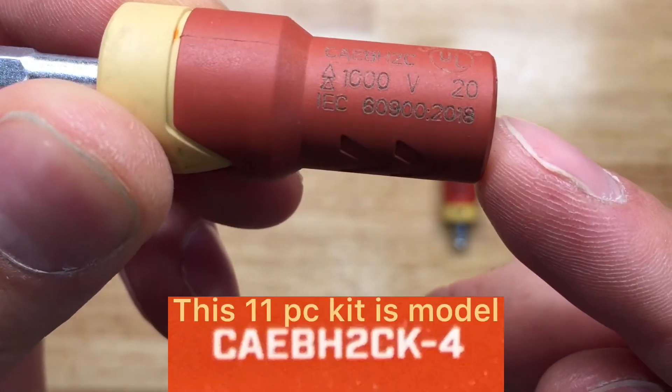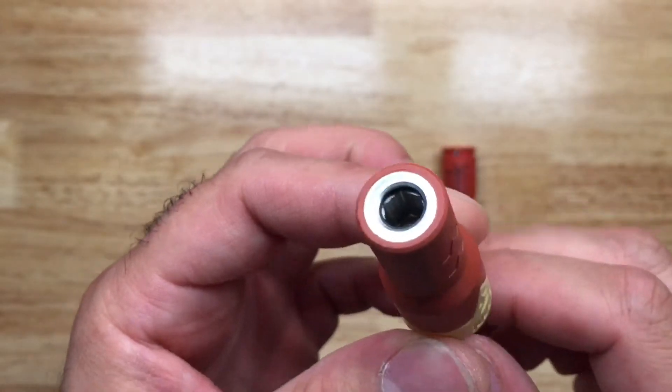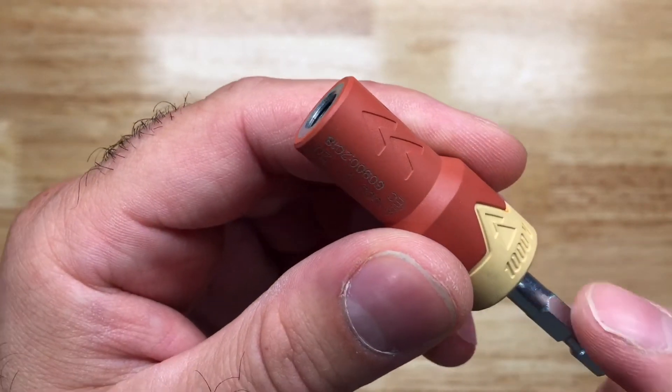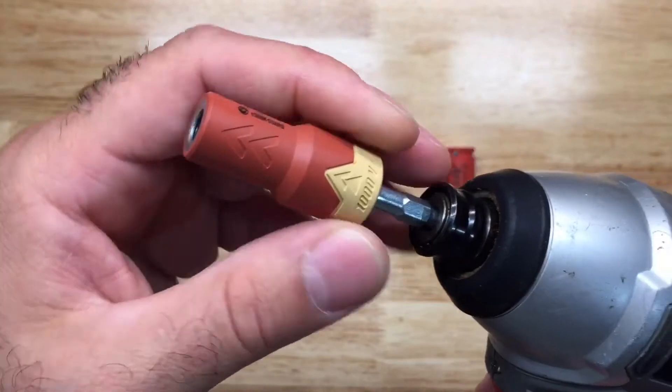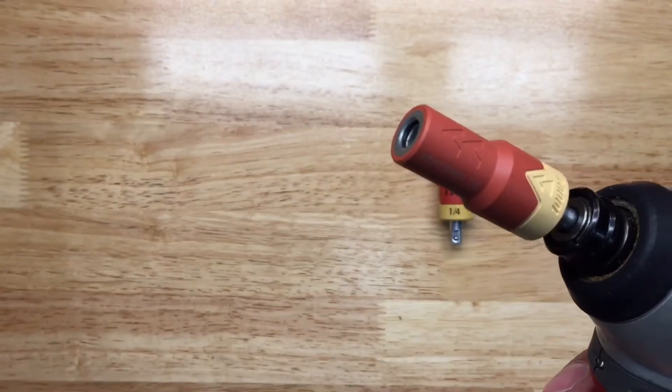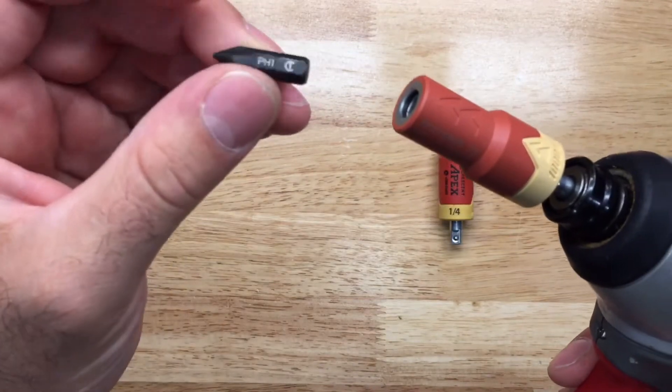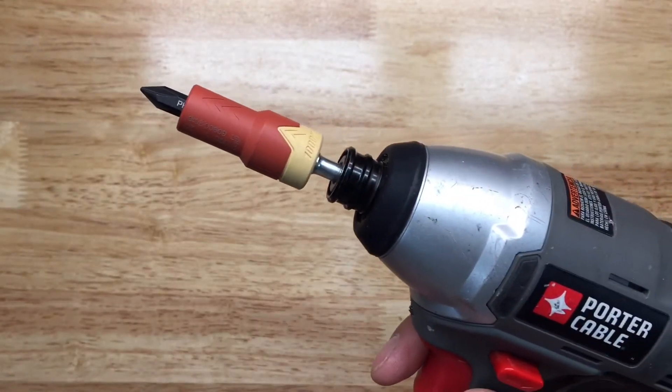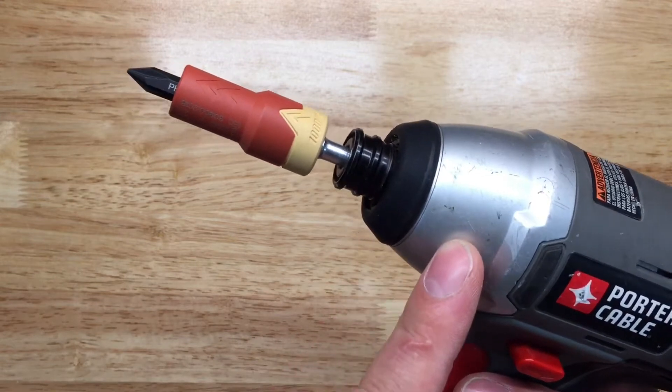You put this on your impact gun and grab one of the provided bits from Crescent or any other bits you have. Now your equipment is protected in case of an accidental shock if somebody were to accidentally turn on the power.